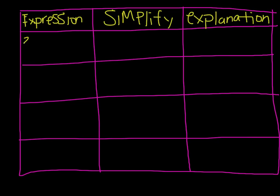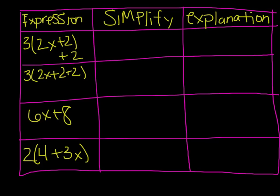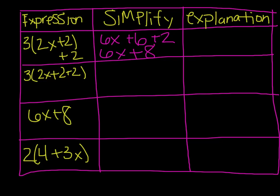Let's put in these expressions. On this first expression, we have some distributing to do. We take 3 times 2x, which gives us 6x, plus 3 times 2, which is 6. Notice this 2 is not inside the parentheses, so it does not get multiplied by 3. Since the 2 is outside the parentheses, it just stays 2. So then we have 6x plus 6 plus 2, which is 6x plus 8. I used the distributive property and also combined like terms.